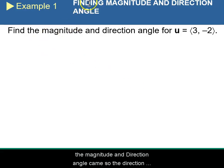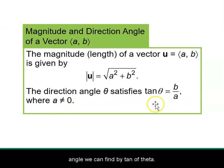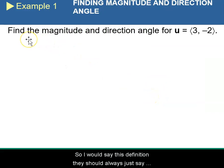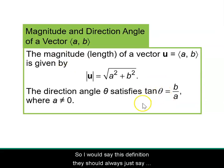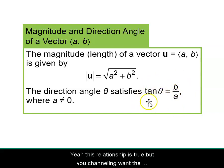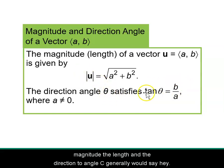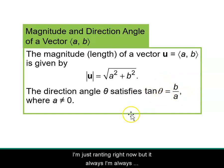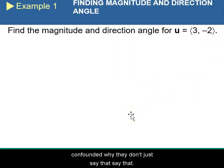Example one: finding the magnitude and direction angle. The direction angle can be found using tan(θ), and to find theta we use the inverse tangent. I always think they should just say theta equals tan inverse of b over a — that's an easier way to state it. This relationship is true, but you generally want the magnitude, the length, and the direction, the angle.